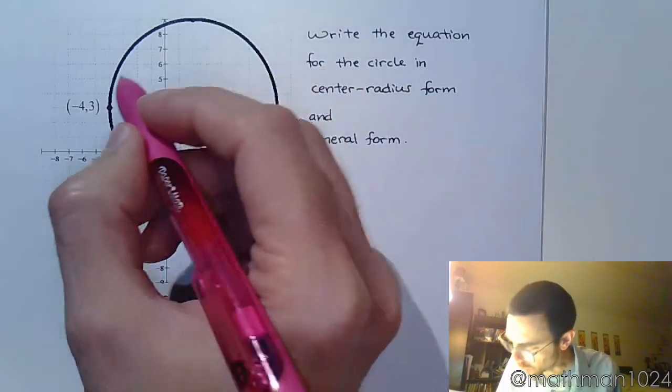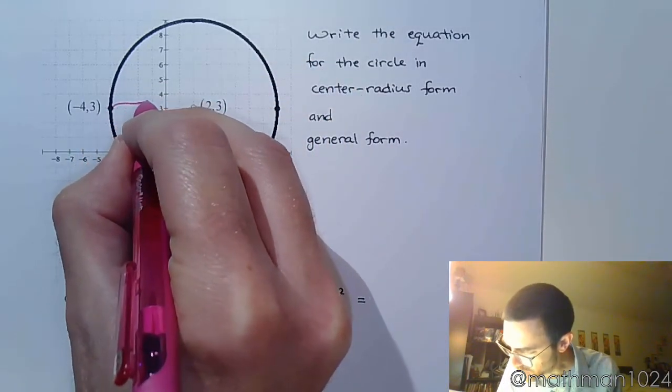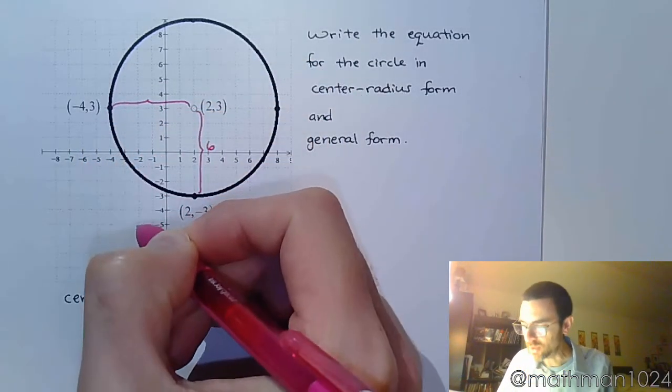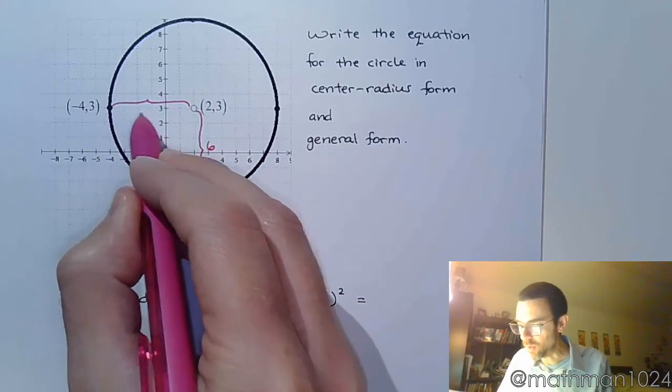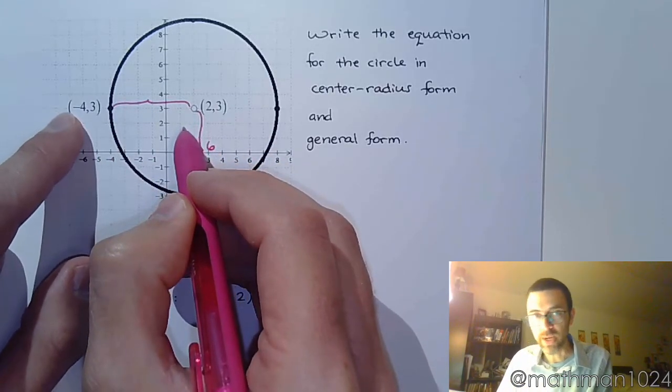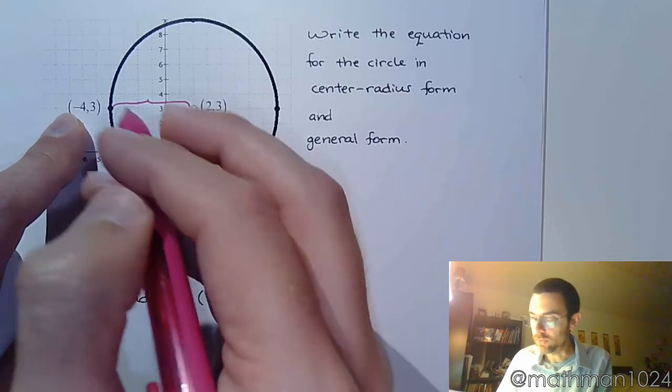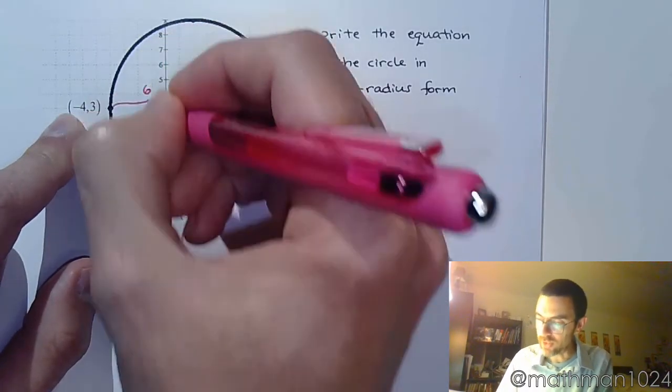Let's look at this point here, just to make sure. If I go from here to here, what's that change? You can count the units. You can also see that you go from an x value of negative 4 to an x value of 2, and so the change there is 6.